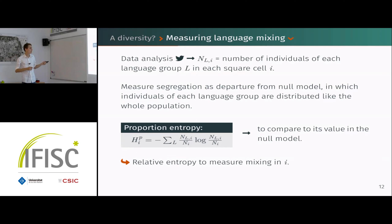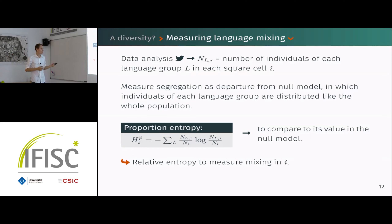To map this in every cell and see how much people mix, we use what we call the proportion entropy. We get a proportion of speakers who speak language l in each cell by dividing by the cell population, compute this entropy, and take the ratio with its value given the global proportions — giving us a measure of mixing in each cell.